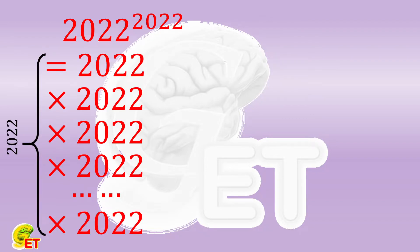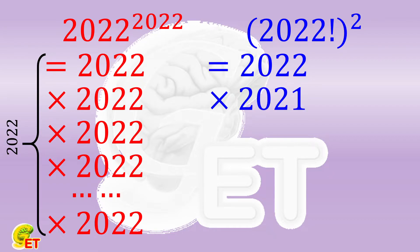The factorial of 2022 is 2022 multiplied by 2021, multiplied by 2020, multiplied by 2019, all the way till multiplied by 1, which also has 2022 factors.